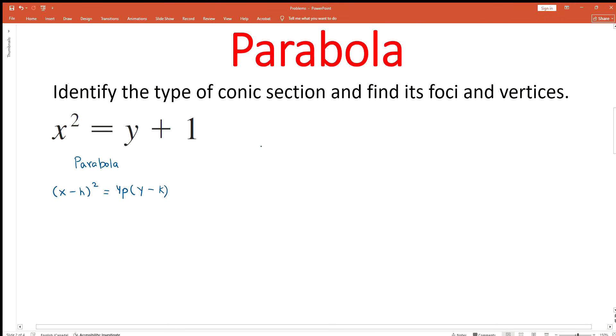We can compare the general equation and the given equation to find the values of h, k, and p. We can write the given equation in conic form as (x-0)². Because the square is just on x, there is no number with x. We put y + 1 in parentheses. Now we can compare the general equation with this equation to find the values of h, k, and p.